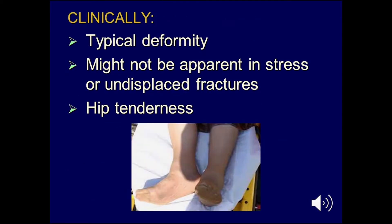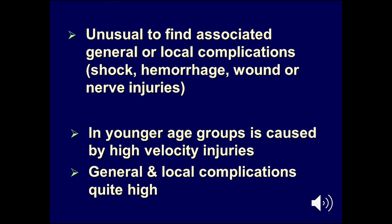Clinically, you have the typical deformity of shortening of the limb with external rotation. However, be aware that this is not always apparent — for example, in stress fractures or undisplaced fractures of the neck of the femur, the only apparent clinical finding may be hip tenderness on palpation or movement. It is unusual to find associated general or local complications such as shock, hemorrhage, or nerve injuries in elderly patients with low-velocity trauma, but in younger age groups with high-velocity injuries, you must exclude general and local complications as their occurrence is quite high.